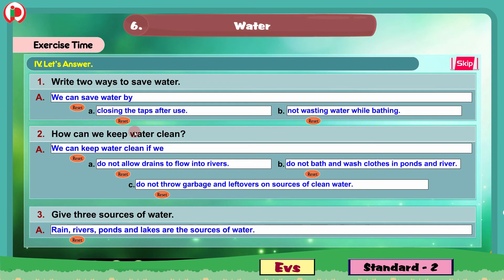So these are the answers for the given questions. To save water: A. Closing the taps after use, B. Not wasting water while bathing. To keep water clean: do not allow drains to flow into rivers, do not wash clothes in ponds or rivers, and do not throw garbage on sources of clean water. Three sources of water: rain, rivers, ponds and lakes. This is about the fourth bit under exercise time.